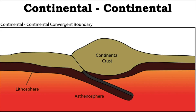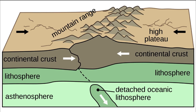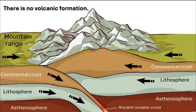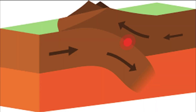The convergence between two continental plates results in a landform called mountain ranges. Since both plates have the same densities, no plate subducts under the other, and there is no volcanic formation. However, since the ground moves, a phenomenon called earthquake may be felt in nearby places.